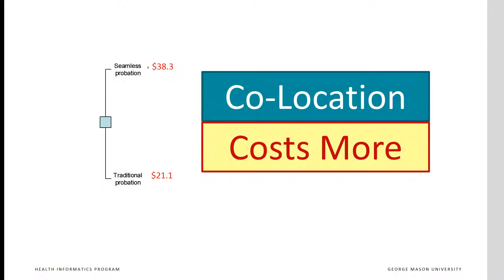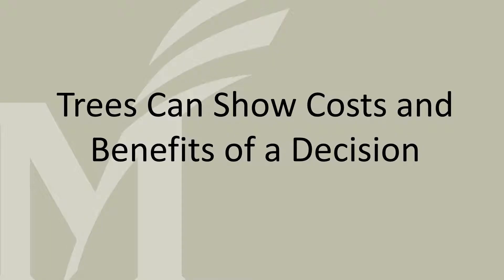The expectation that cost of consequences would reduce the overall cost of the program was not realized. In fact, co-location of probation and treatment led to higher costs, mostly because of consequences that followed from increased monitoring of individuals in the seamless delivery program. Decision trees can show costs and benefits of a decision.